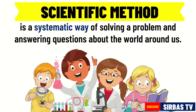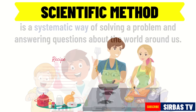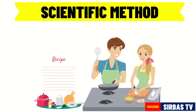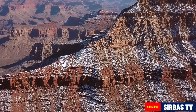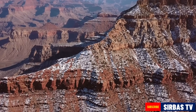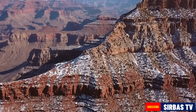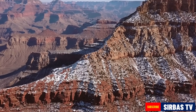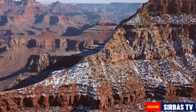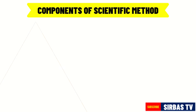The scientific method is a way of solving problems. It is a systematic way of solving a problem and answering questions about the world around us. It is like a recipe that you follow to come up with delicious food. We can use the scientific method to understand our world even better. A scientific method consists of seven components or steps.